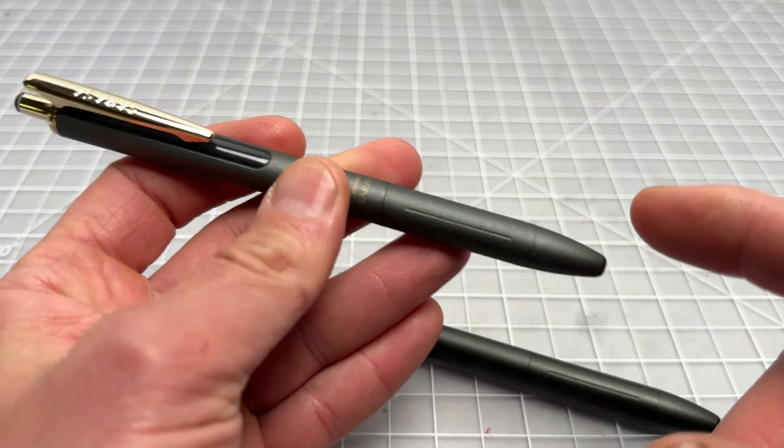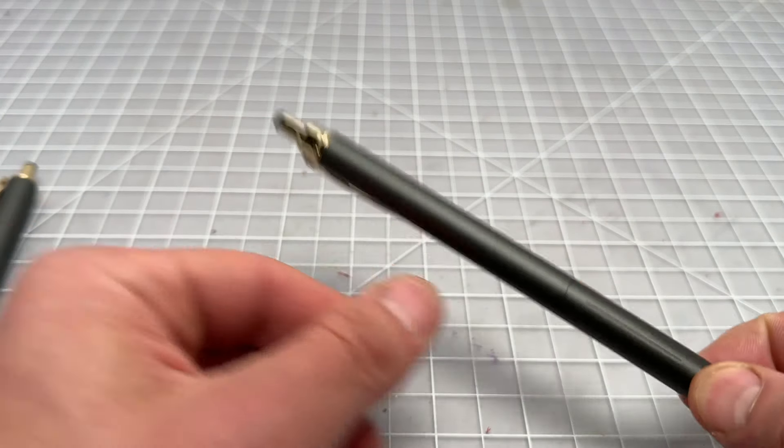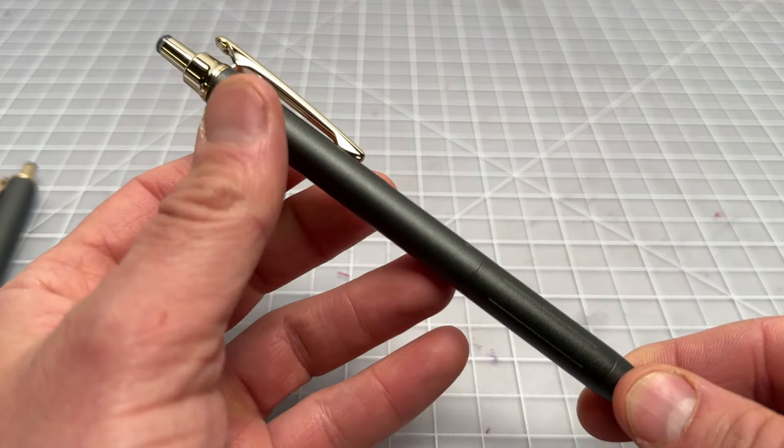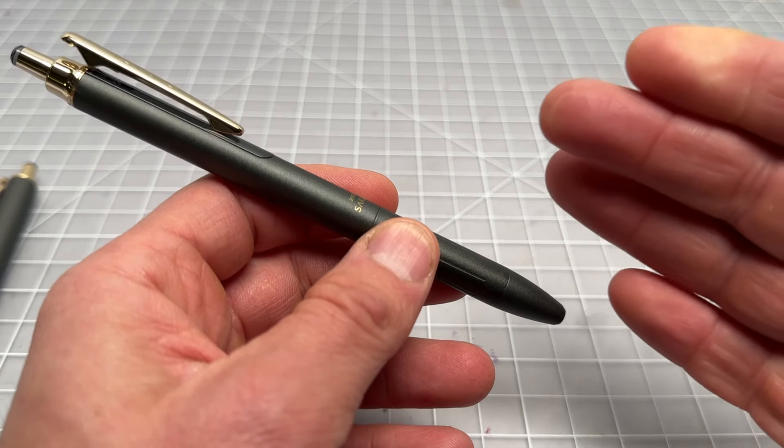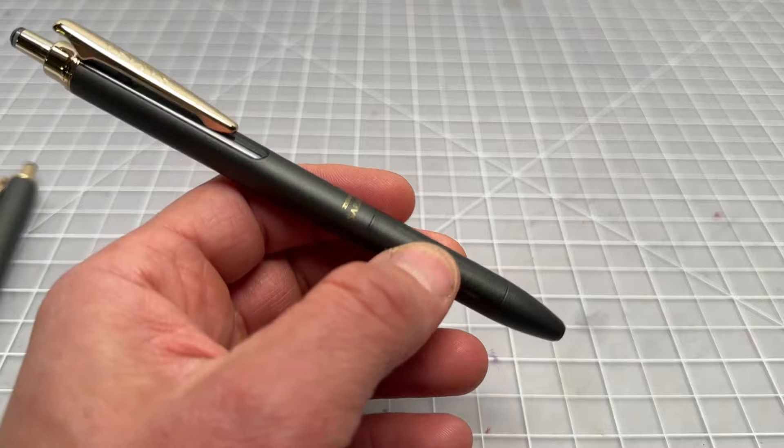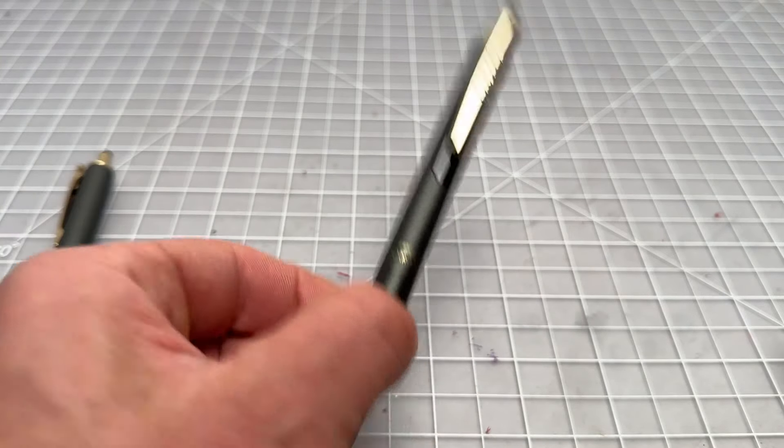Zebra says they lowered the center of gravity on the new pen, so in making it lighter they must have lightened up the top more than the bottom. Essentially that lowers the center of gravity of the pen. I gotta say that one's hard to tell.